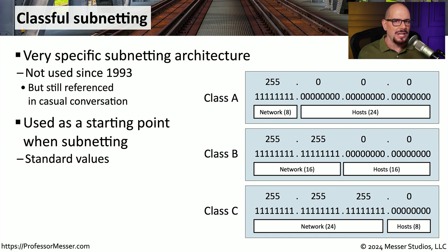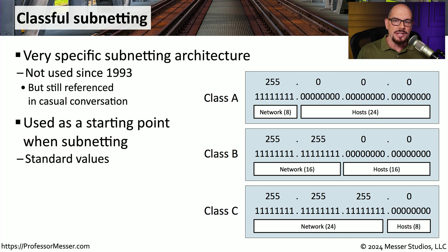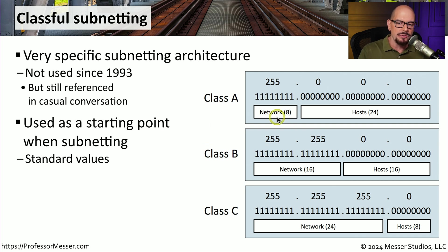So if we don't use classes, why are we doing a video on class-based networking? That's because these classes do act as a starting point when we begin any type of subnetting on our networks. If you're going to subnet a network, it's important to know where to begin the subnetting process. This class-based system is the starting point. These class A, class B, and class C addresses have an obvious demarcation between the network part of the address and the host part of the address.